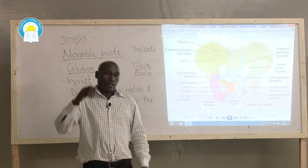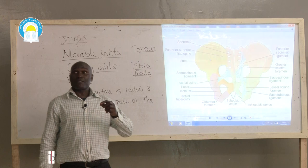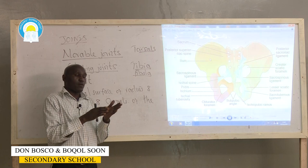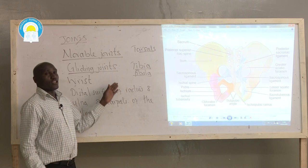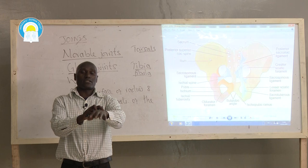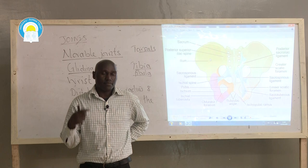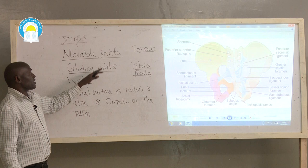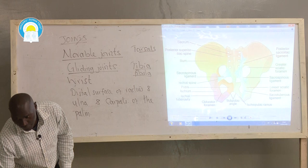The last type of sliding joint is between the vertebrae. Vertebrae are small bones found from the neck region to the tail region. Between them are articular discs that enable each vertebra to slide slightly over the other, allowing us to bend or stretch. So, gliding joints are found at the wrist, at the ankle, and between the vertebrae — joints where bones slide over each other.